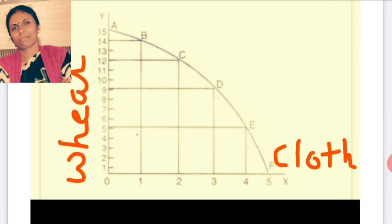On OX, cloth is given and on OY, wheat is given. All combinations are shown here — A, B, C, D, E, F. When we plot according to the table, we get this type of curve, and the curve is concave. When we produce 15,000 quintals of wheat, we produce 0 meters of cloth. And if all resources are employed to produce cloth, 5,000 meters of cloth is produced and 0 quintals of wheat. Combinations A, B, C, D, E, F are given. This is about the production possibility curve, which is asked as a short question.